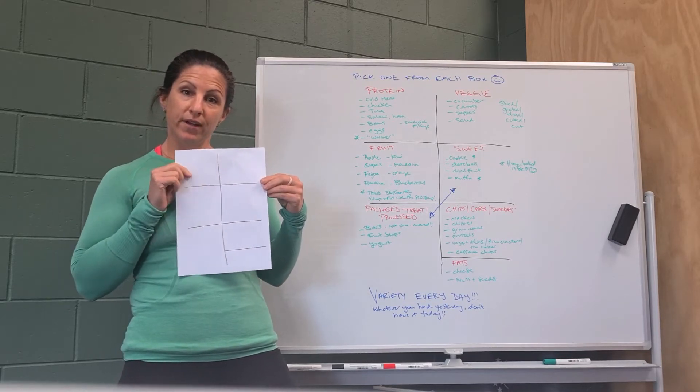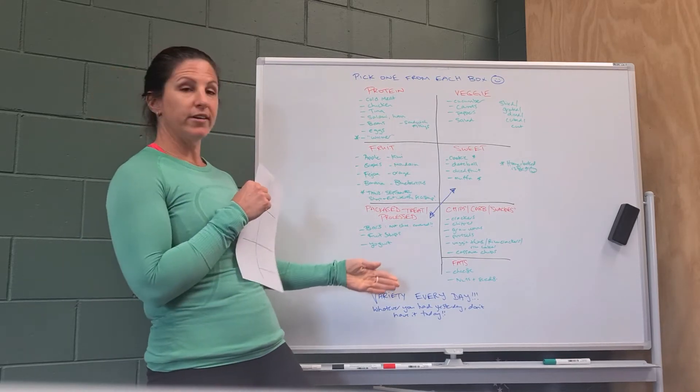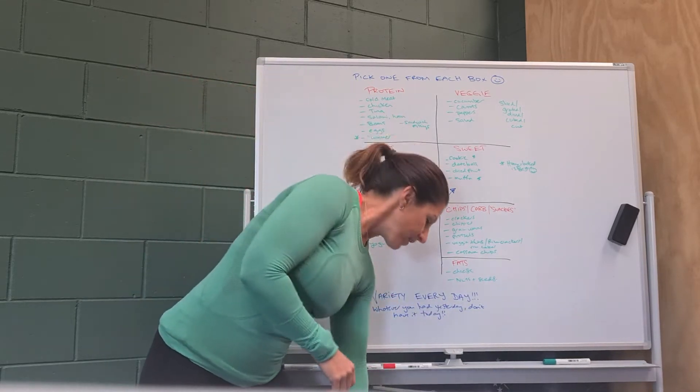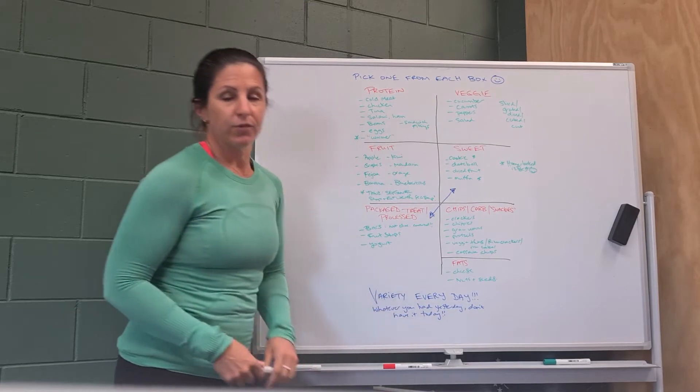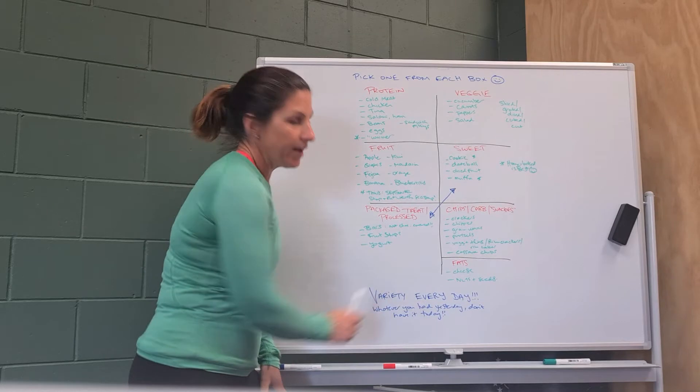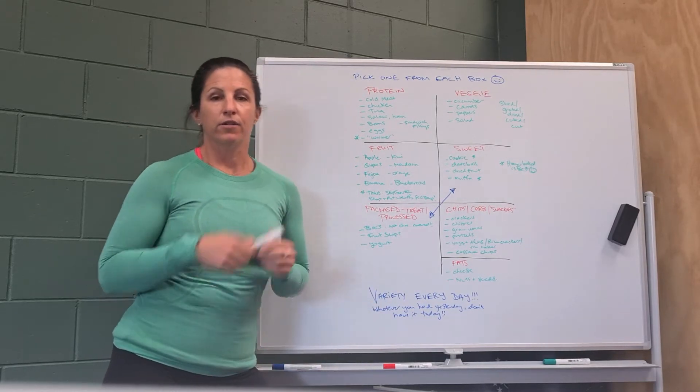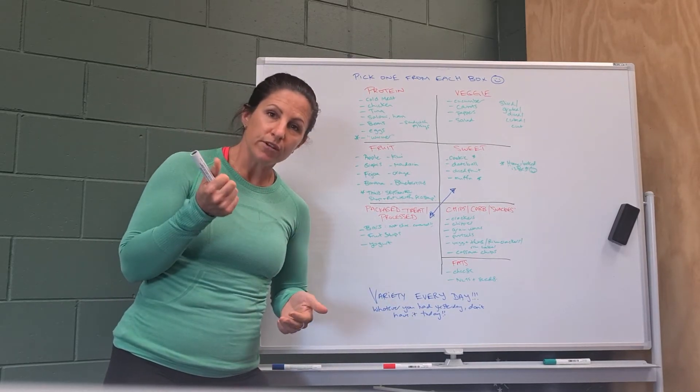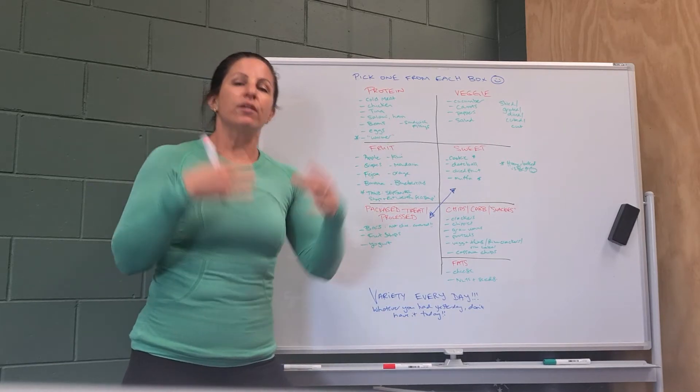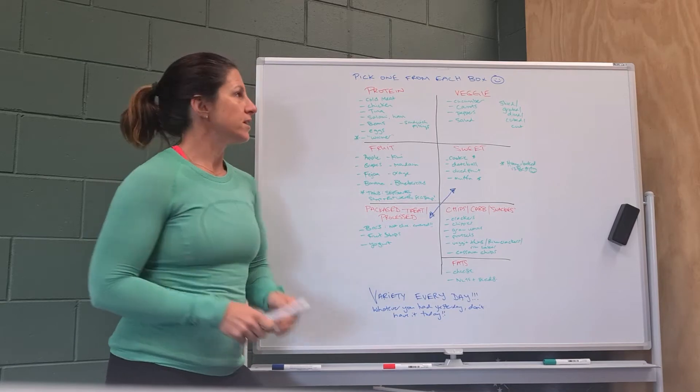Okay, and what we're going to do is have a look here at all of those sections. So first things first, when we're making a healthy lunchbox, what we really want to think about is variety every single day. So variety in the foods that we choose, in the colors that we have, and also which category each food comes from. That's really important.